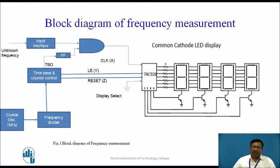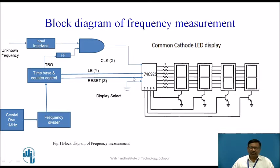Let us see the block diagram of frequency measurement. Here, this is IC74C926 and its associated displays. There are four seven-segment displays which are driven by four transistors and controlled by lines A, B, C, D. Since this is a multiplex display system, we are giving latch enable input to the counter, reset input to the counter, and also clock input to the counter. Here we have tied display select to ground; when display select is connected to ground, the latched data in the counters will be displayed.